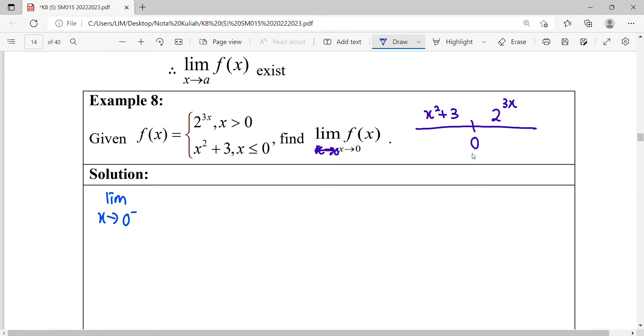So x approaches zero, we can do from the left-hand side first. The function involving here is x² + 3. So substitute x equals zero, you will figure out you get the function is equal to 3.